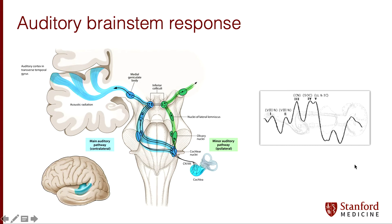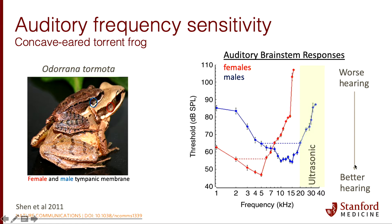In perhaps nature's most extreme example of sexual dimorphism, we have the concave-eared torrent frog from a mountainous area in China. On this graph, we see the thresholds — the loudness needed to elicit an auditory brainstem response. Male frogs are much more sensitive at higher frequencies compared to female frogs, which are more sensitive to lower frequencies. Interestingly, males are also the only ones that can vocalize and respond to these ultrasonic frequencies, though we don't know why.